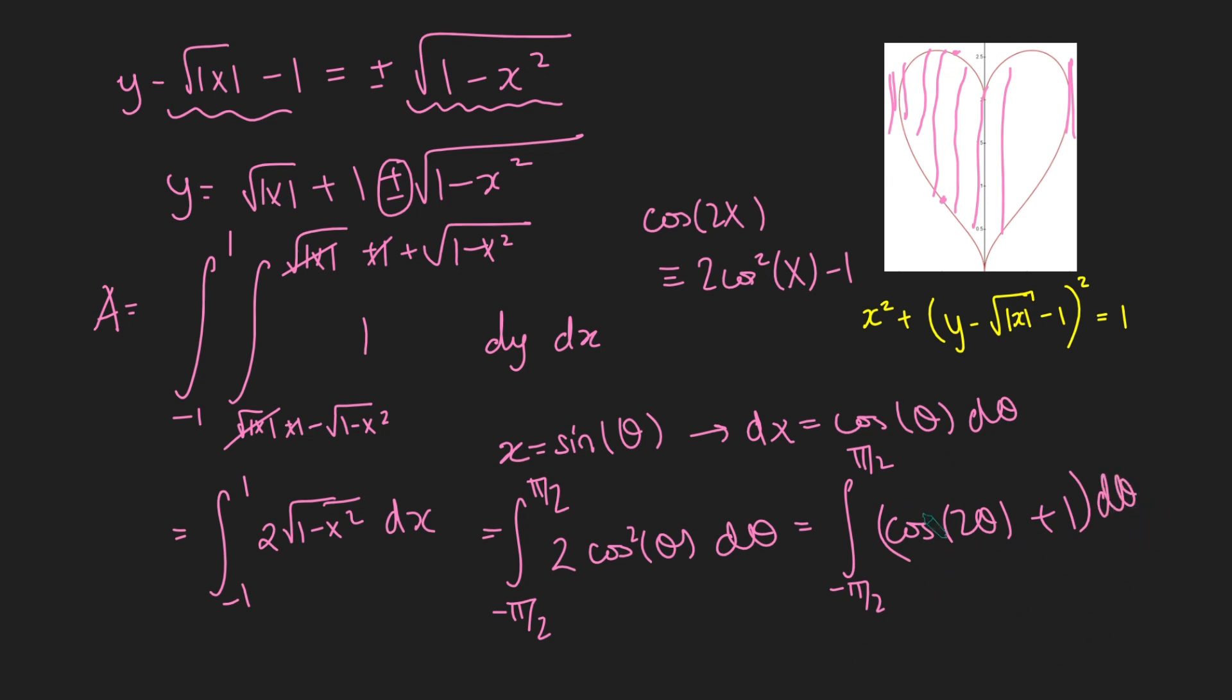And now we can just evaluate this. This is going to be a half sine 2 theta plus theta between pi over 2 and minus pi over 2. But sine of 2 times pi over 2, that's sine of pi, which is 0. And similarly, sine of minus pi is also 0. So this is just going to be pi over 2 minus minus pi over 2. And beautifully, this equals pi, which is pretty nice. The area of this heart here actually equals pi.